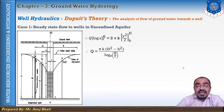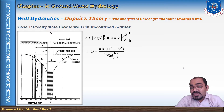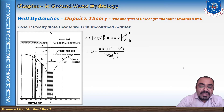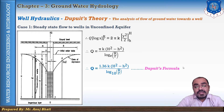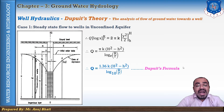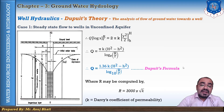Substituting the value of π and converting from natural log to log base 10, the discharge becomes Q = 1.36k(H² - h²) / log₁₀(R/r). This is Dupuit's formula for discharge from a well. The radius of influence R can be computed as R = 3000 × s × √k, where s is the drawdown and k is Darcy's coefficient of permeability.